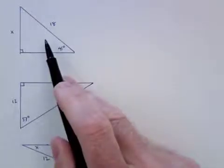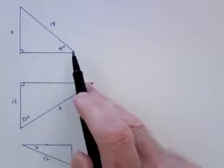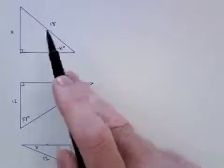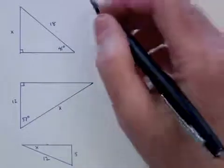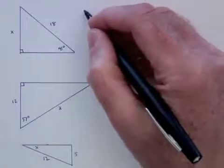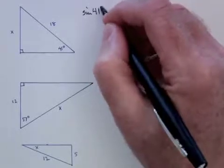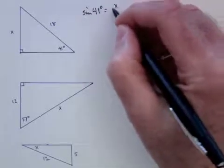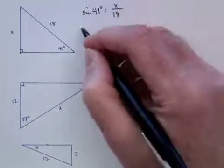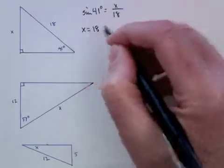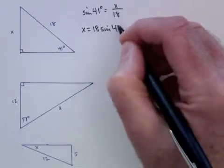If you take a look at the first triangle here, we have a right triangle with an acute angle of 41 degrees, hypotenuse of length 18, and an opposite side of unknown length. So it must be the case that the sine of 41 degrees is x, the opposite side, over 18. Therefore, x will be 18 times the sine of 41 degrees.